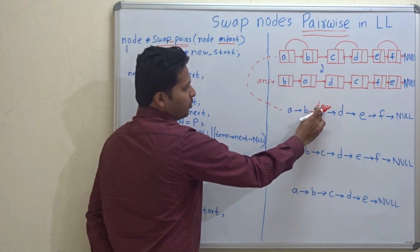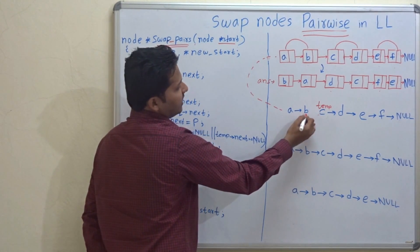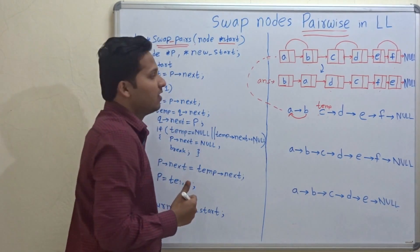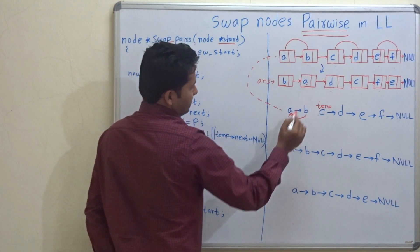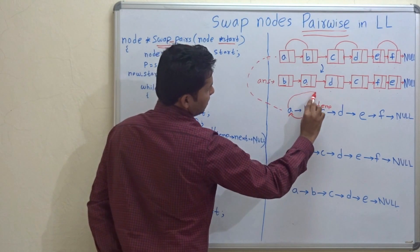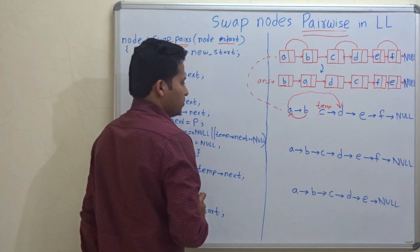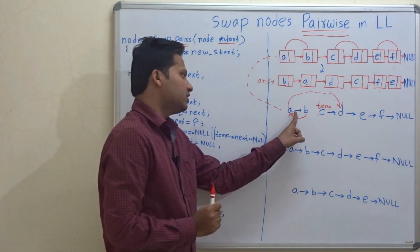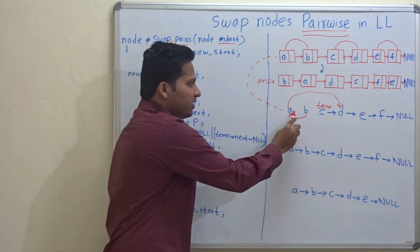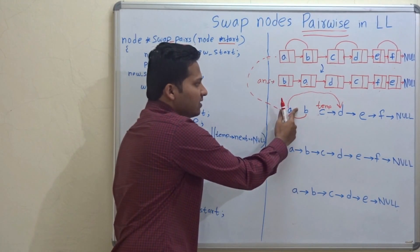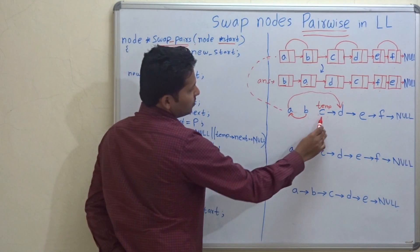Now the temp variable points to C, and we are allowed to change the pointer of B. Now A points to D, so let's make the pointer of A point to D — that is the next of temp. So for this pair, we have swapped the pointers. Let's go to the next pair now.